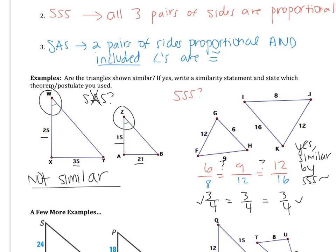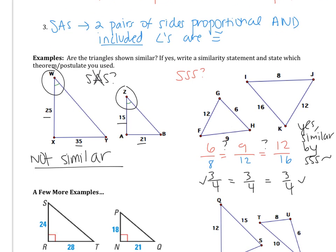We are also asked to write the similarity statement. The first triangle I'll call GHF — going in that order, I go small side, medium side, large side. So on the other triangle, I need to go small, medium, large, which gives IJK. Remember, that's not the only valid similarity statement, but the vertices do need to be listed in the same corresponding order.